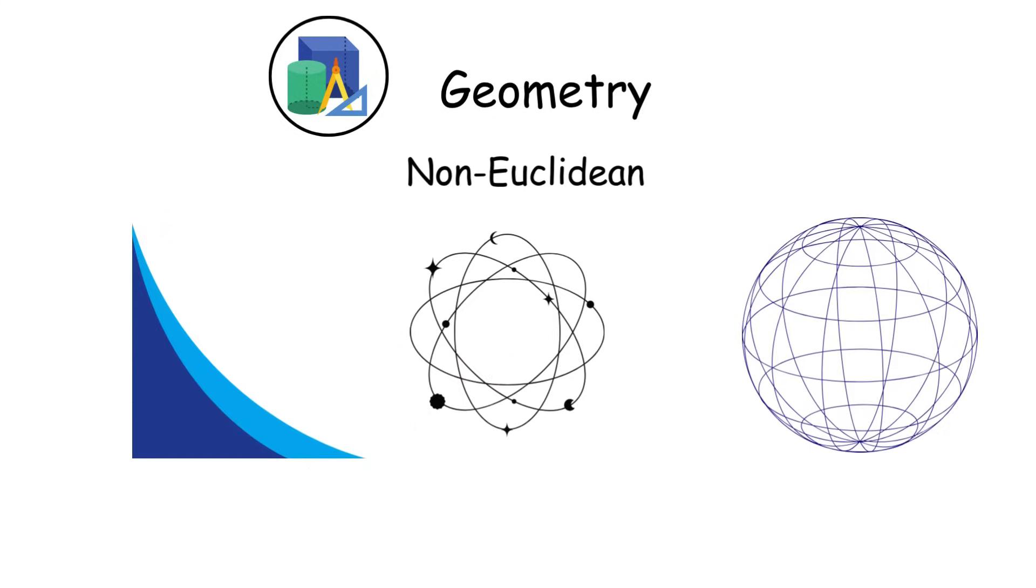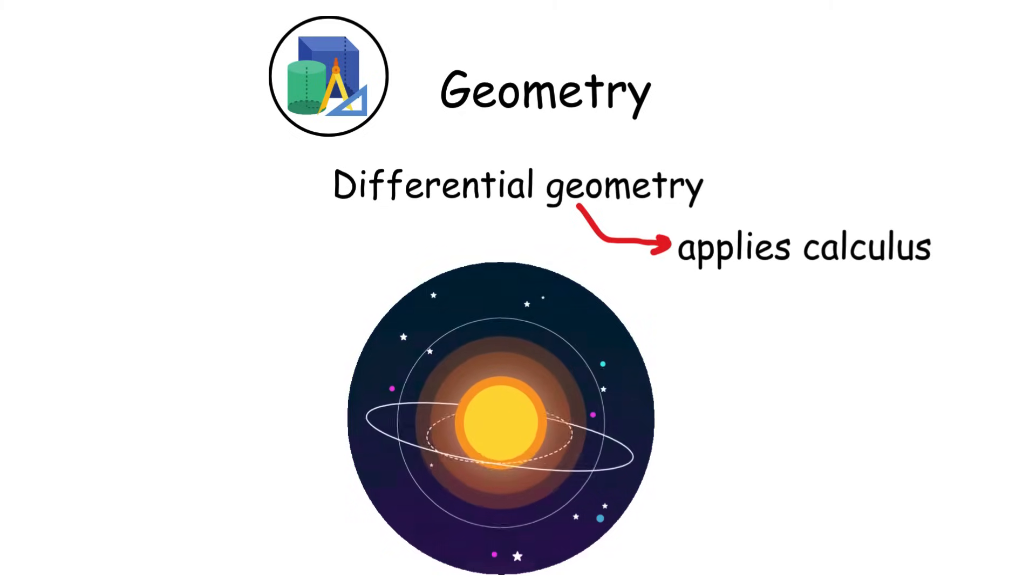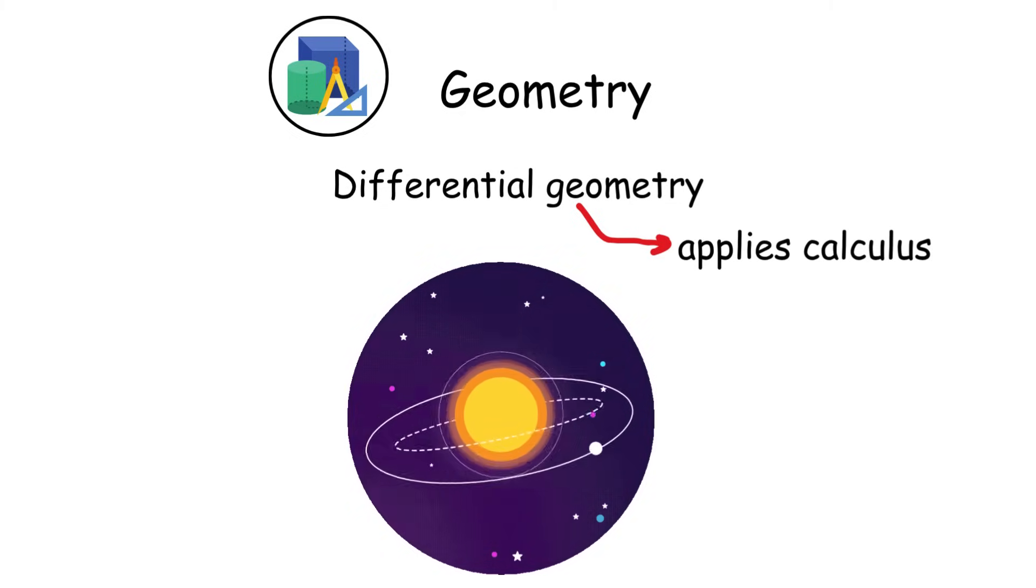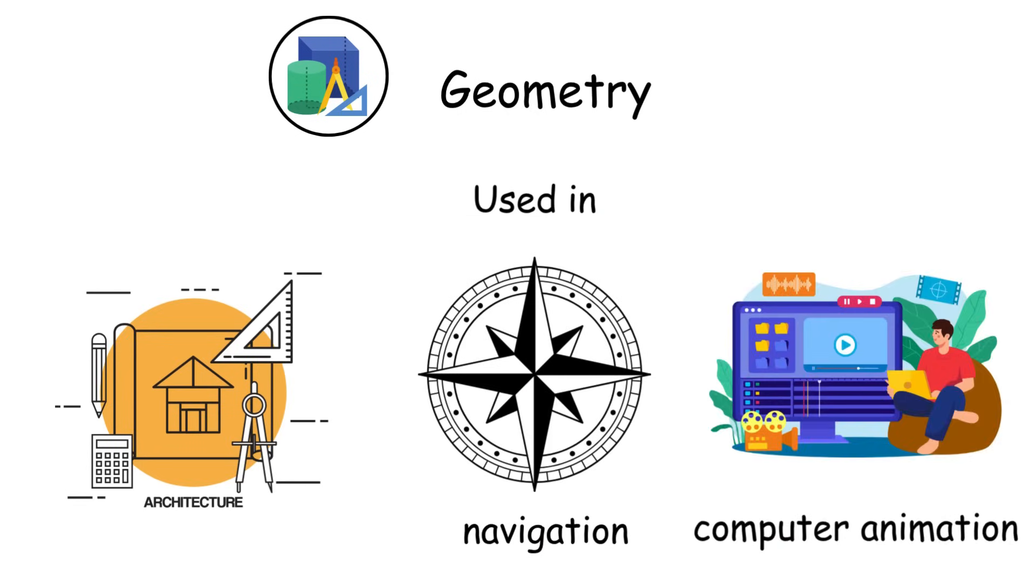Non-Euclidean geometry introduces curved spaces, like spheres, critical for understanding the universe and relativity. Differential geometry applies calculus to study smooth surfaces, such as planetary orbits. Geometry's visual nature makes it essential for architecture, navigation, and computer animation, transforming abstract measurements into tangible designs.